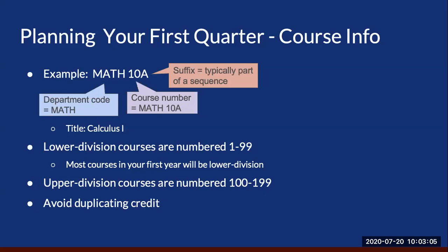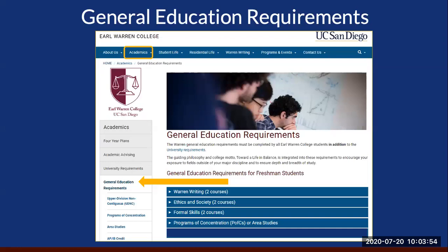Classes numbered 1 to 99 are considered lower division. Any AP, IB, A-level exams, or community college credit you have is lower division. It is likely that all the courses you take in the next year will be lower division. Classes numbered 100 to 199 are considered upper division. Be sure you do not duplicate credit. Duplications occur when you enroll in a course you've already received credit for. If you are planning on a course that seems very similar to an IB, AP, A-level, or community college course you have taken, contact one of us at Warren Advising. WebReg will prevent you from enrolling in classes equivalent to courses already listed on your academic history, but it is not foolproof. WebReg will not prevent you from enrolling in a course you received credit for via AP, IB, or transfer coursework.